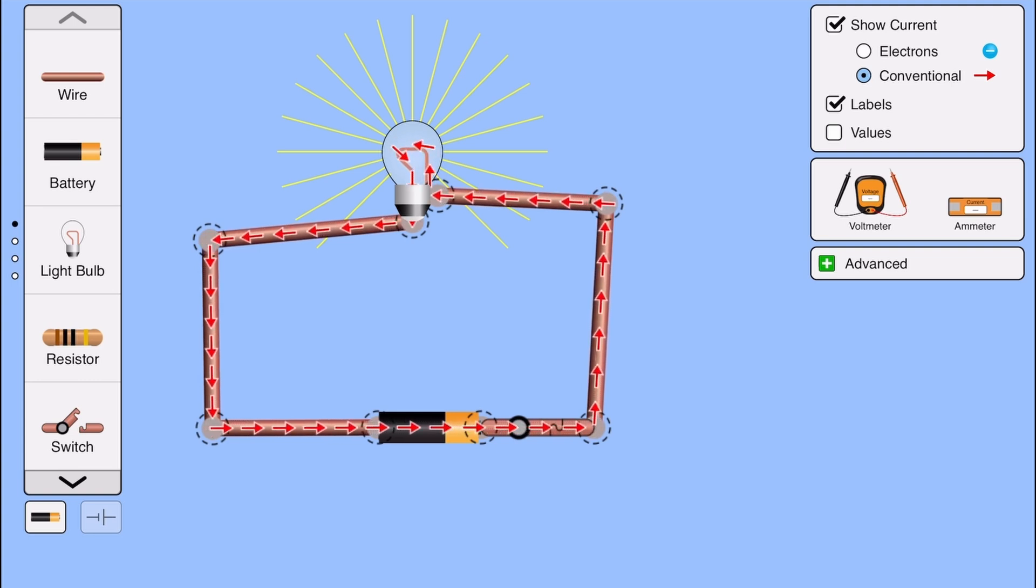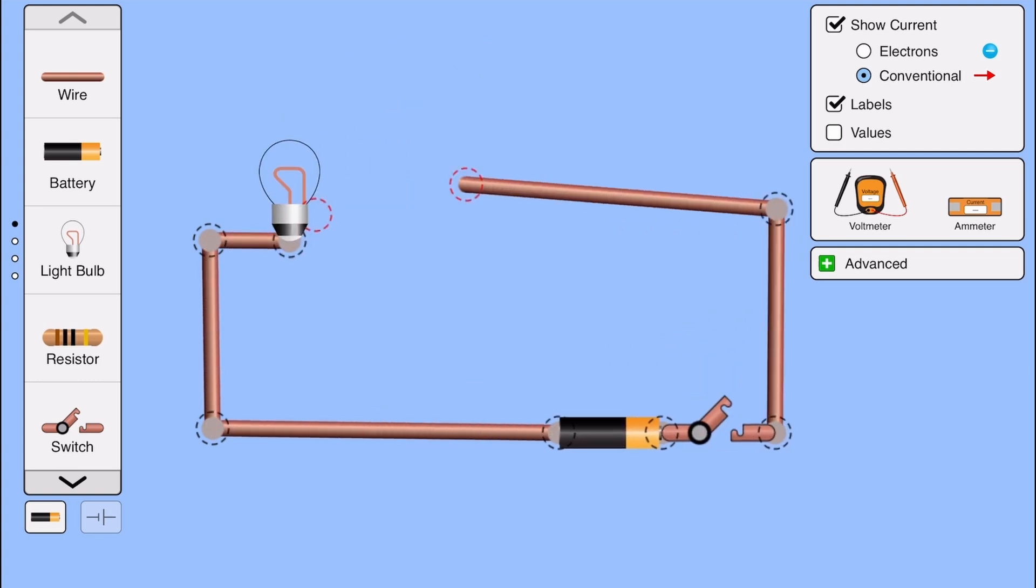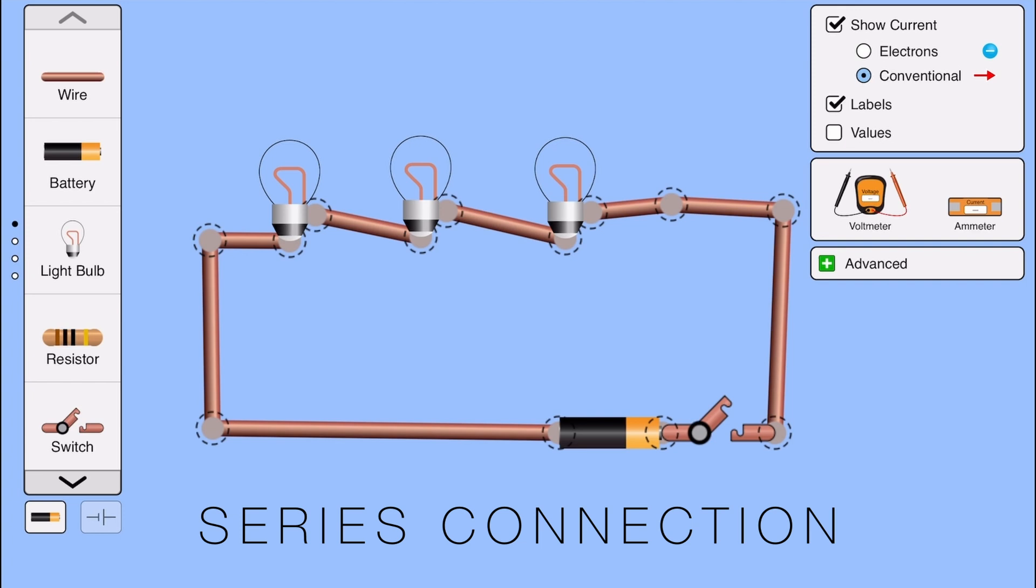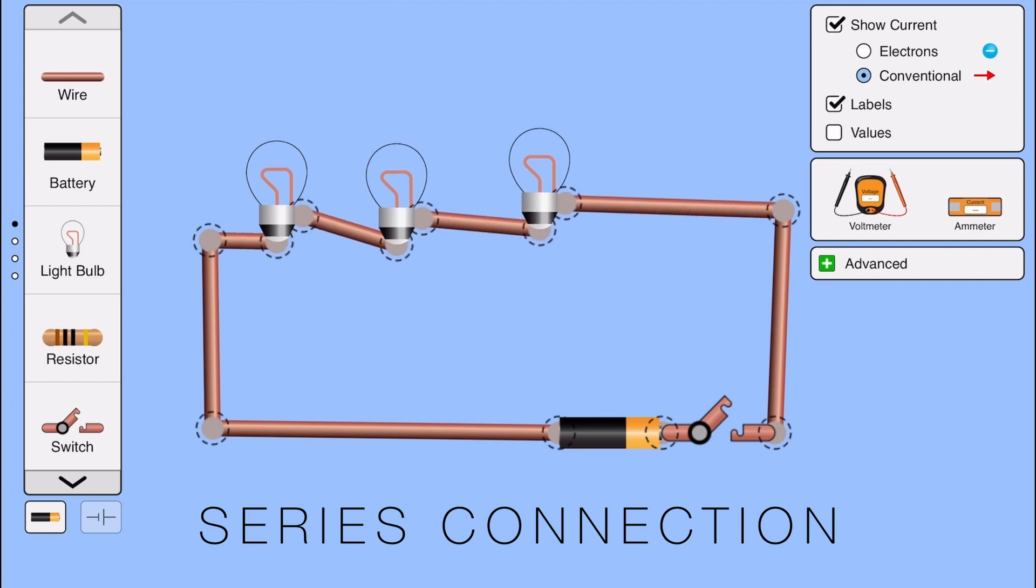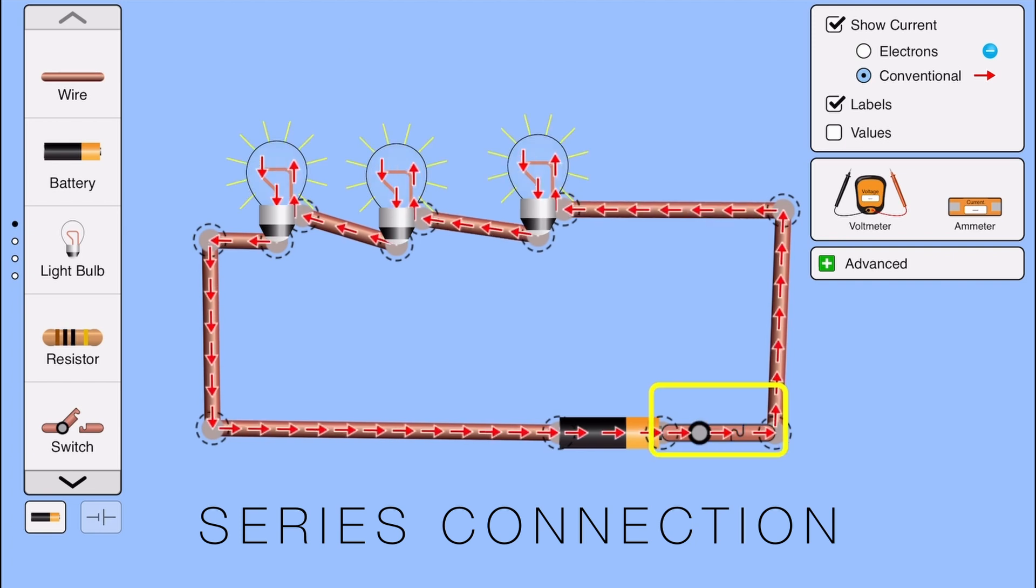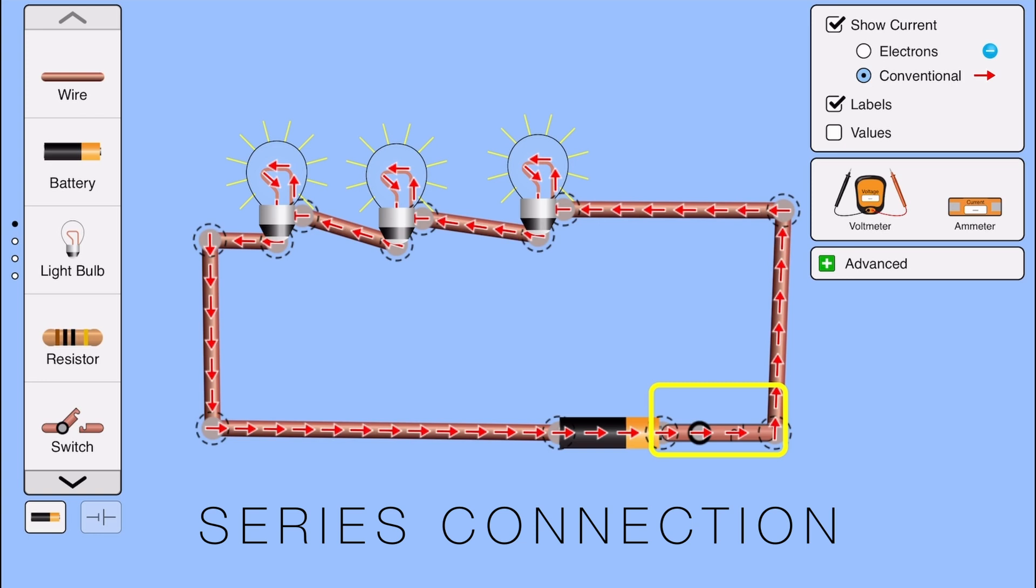I'm going to connect three bulbs, one after the other, in a row. This type of connection is called a series connection. Why series? Because they are literally connected in series, back to back, one after the other, like a chain. Switch it on. Oh, look. All three bulbs are glowing. But wait. Notice something? The glow isn't as bright as before. When we just had one bulb, it was shining brighter. Now with three, they look dimmer.